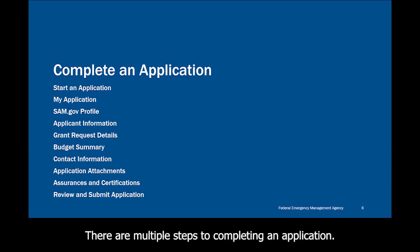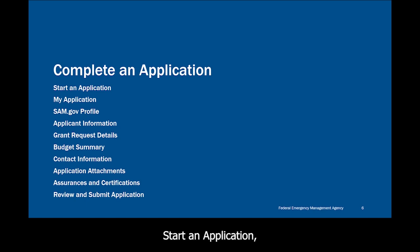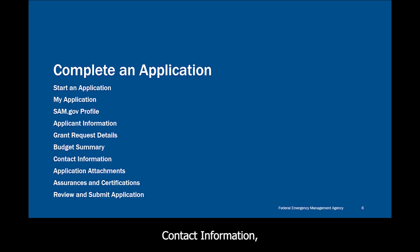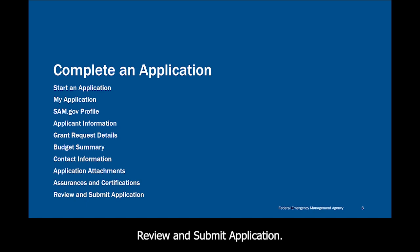There are multiple steps to completing an application. We will walk through the following steps: Start an application, My Application Landing Page, SAM.gov Profile, Application Information, Grant Request Details, Budget Summary, Contact Information, Application Attachments, Assurances and Certifications, and Review and Submit Application.